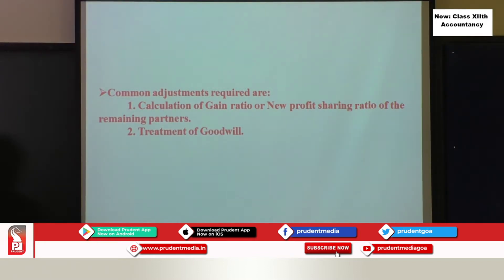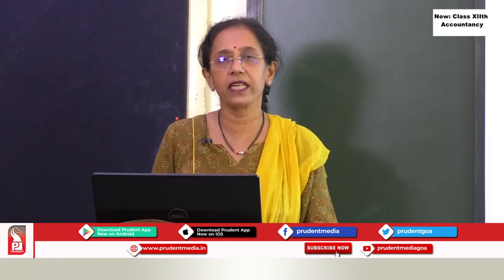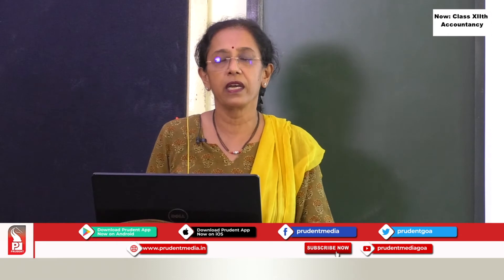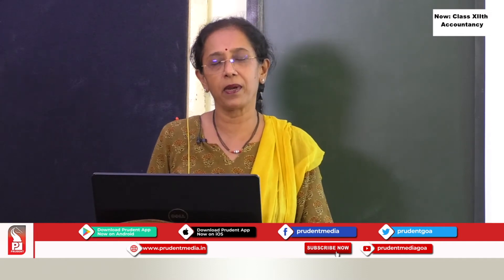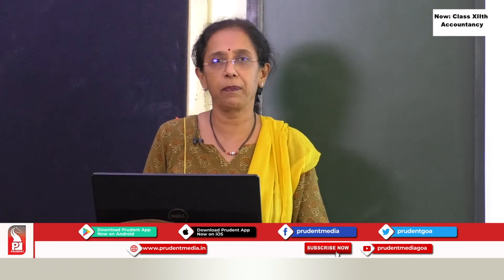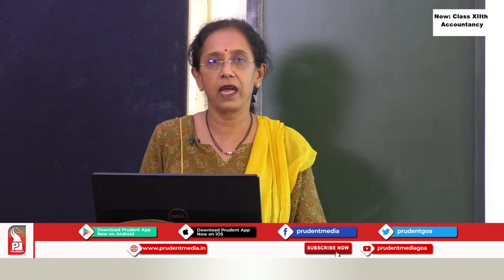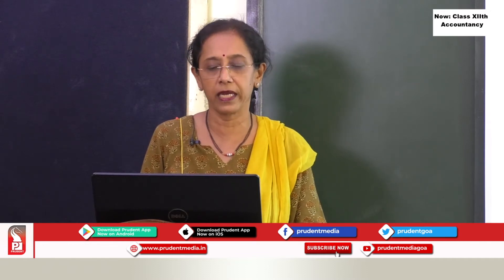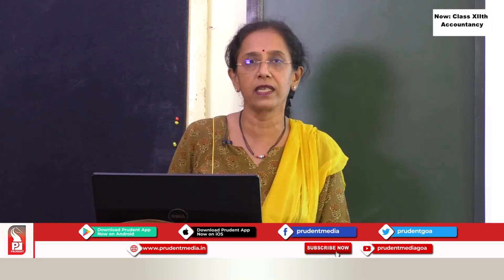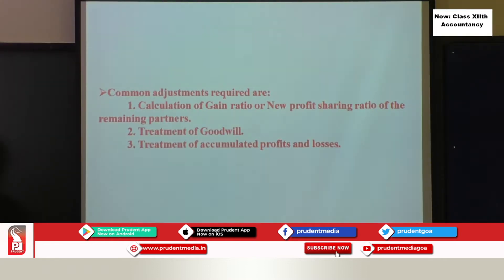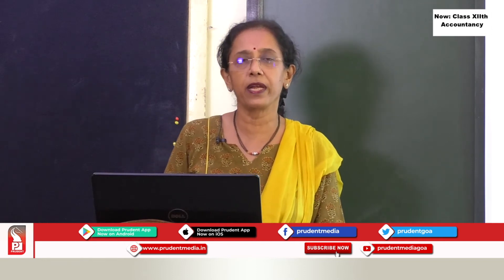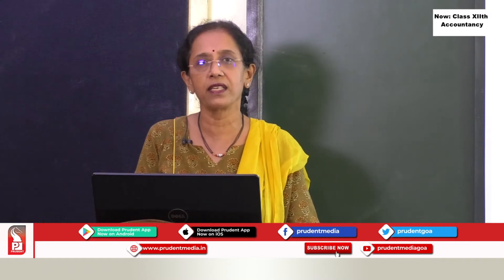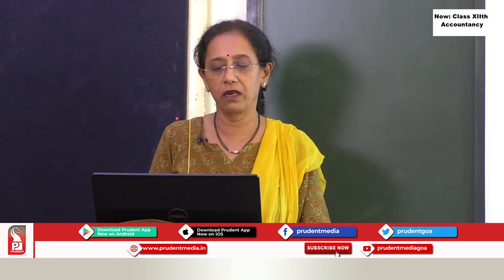Treatment of goodwill you have also seen. When goodwill is adjusted, it is adjusted only to the extent of the retiring partner's share. We debit the remaining partners' capital accounts and credit the retiring partner's capital account, because we have to give his share to him and this sharing is done in the gain ratio. Then you have also seen about accumulated profits and losses — undistributed profits and losses are to be distributed before the retirement because the retiring partner's share is to be credited to his capital account.